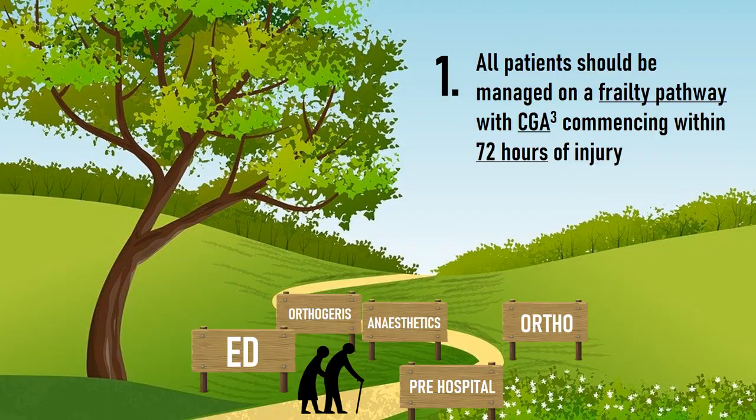One: all patients should be managed on a frailty pathway with comprehensive geriatric assessment commencing within 72 hours of injury. The pathway should demonstrate collaboration between pre-hospital, ED, orthopaedic, anaesthetic and orthogeriatric clinicians.